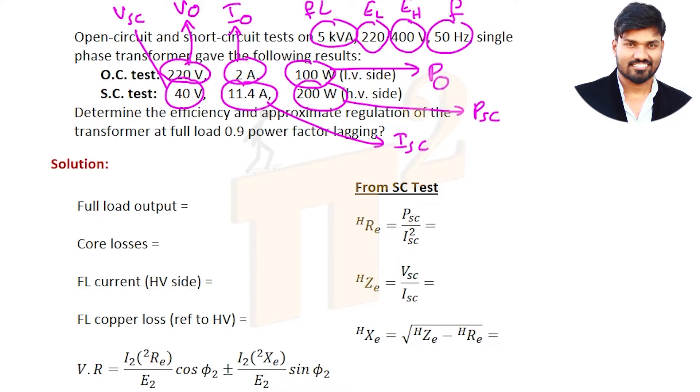Whenever you see this OC test SC test question, bring this table, write this table and fill this table. You will get everything on its own, things automatically lined up if you fill this table. Full load output is 5000.